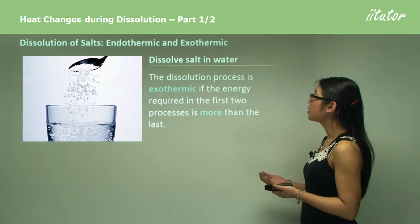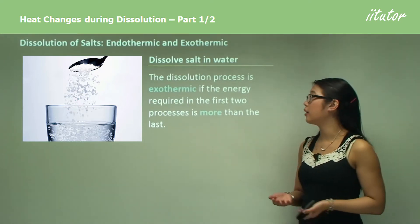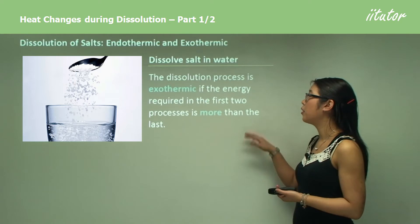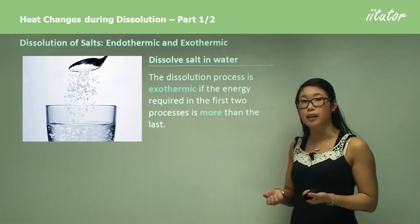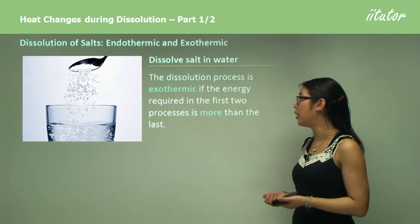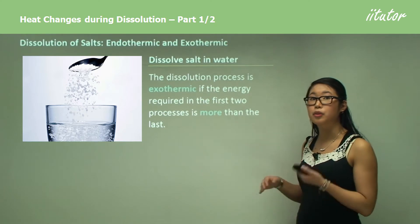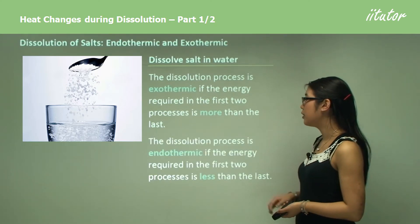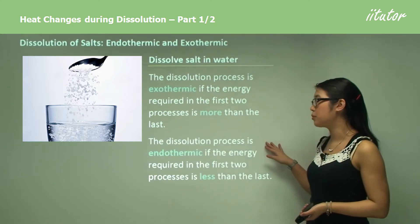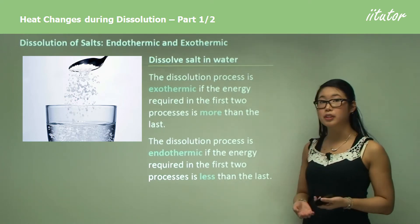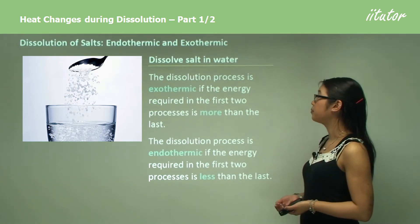The dissolution process is exothermic if the energy required in the first two steps — breaking the ions apart and breaking the water apart — is more than the energy released in forming the ion-dipole bonds. The dissolution process is endothermic if the energy required in the first two steps is less than the energy released in the last step.